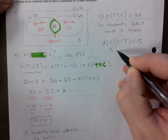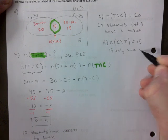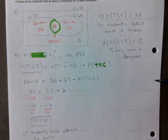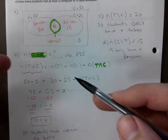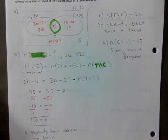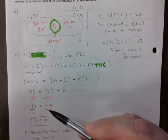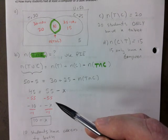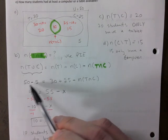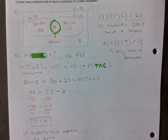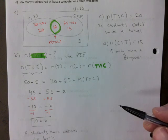Quick warning: if you ever get x as a decimal when using PIE, you probably did something wrong. If you legitimately get a negative result that isn't the negative-x situation, go back and check. The most common error I see is forgetting to subtract the outliers from the universal before applying the formula — that's usually the main problem.